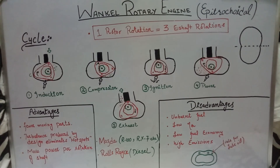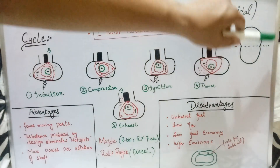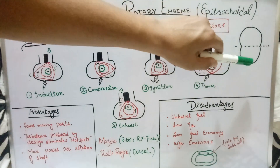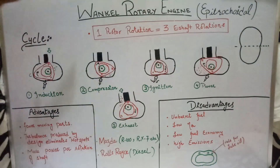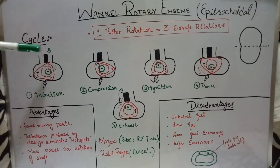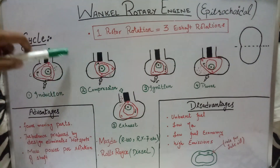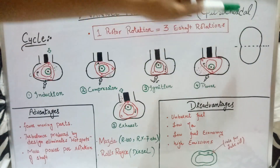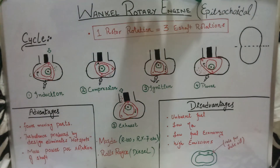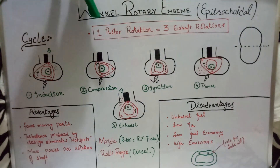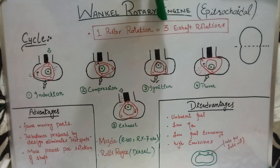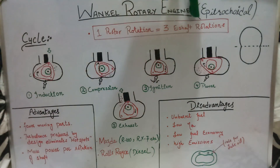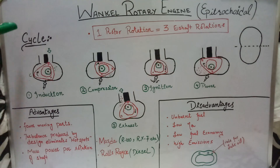The engine housing is based on the epitrochoidal shape — the housings are made just like epitrochoids, which is why these engines are also called epitrochoidal engines. Remembering that one rotor rotation equals three eccentric shaft rotations, I am going to explain the combustion cycle.